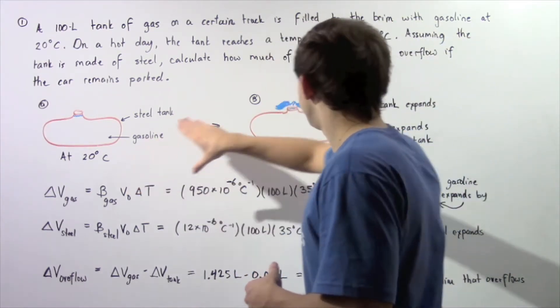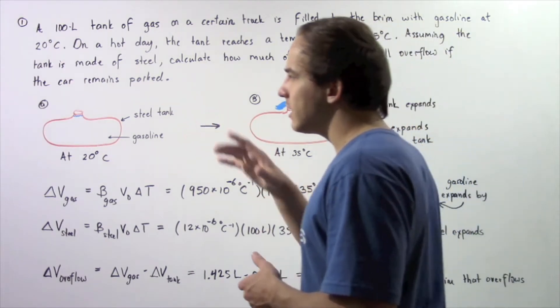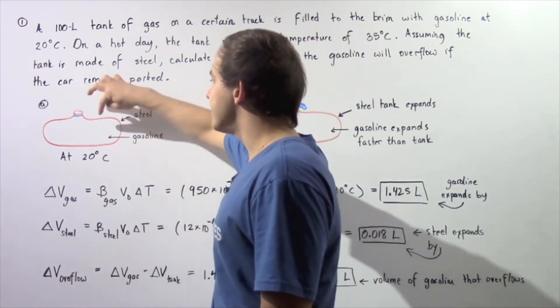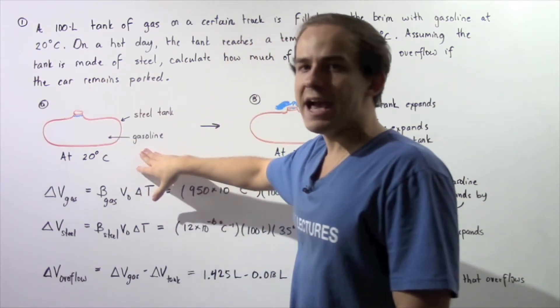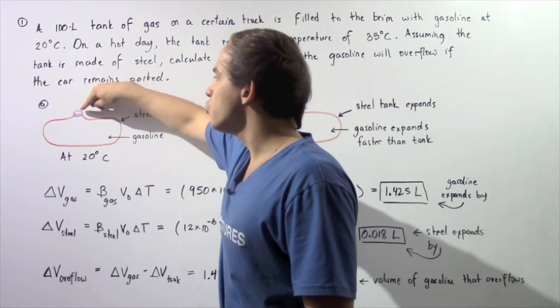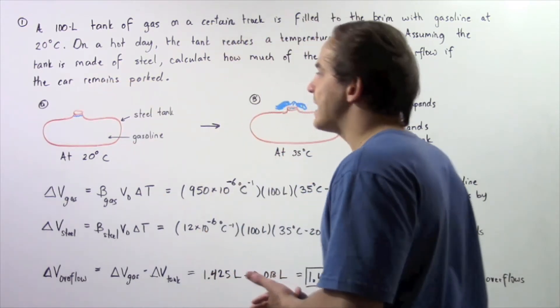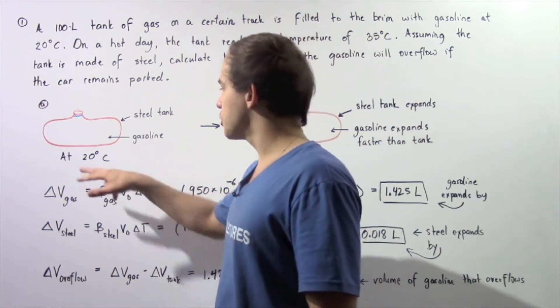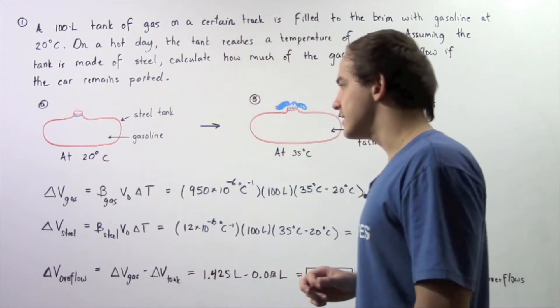So let's begin by looking at the following two diagrams. In diagram A, we have a depiction of our steel tank and inside the steel tank, we have the gasoline. Now the gasoline is filled to the top of our steel tank and the gasoline and the tank are at the same temperature given by 20 degrees Celsius.